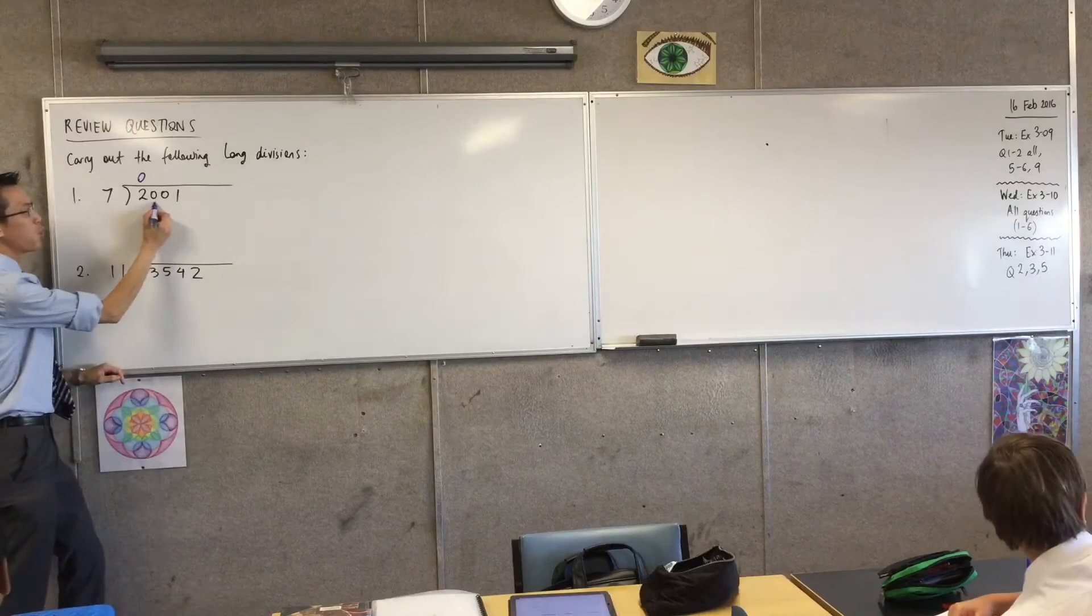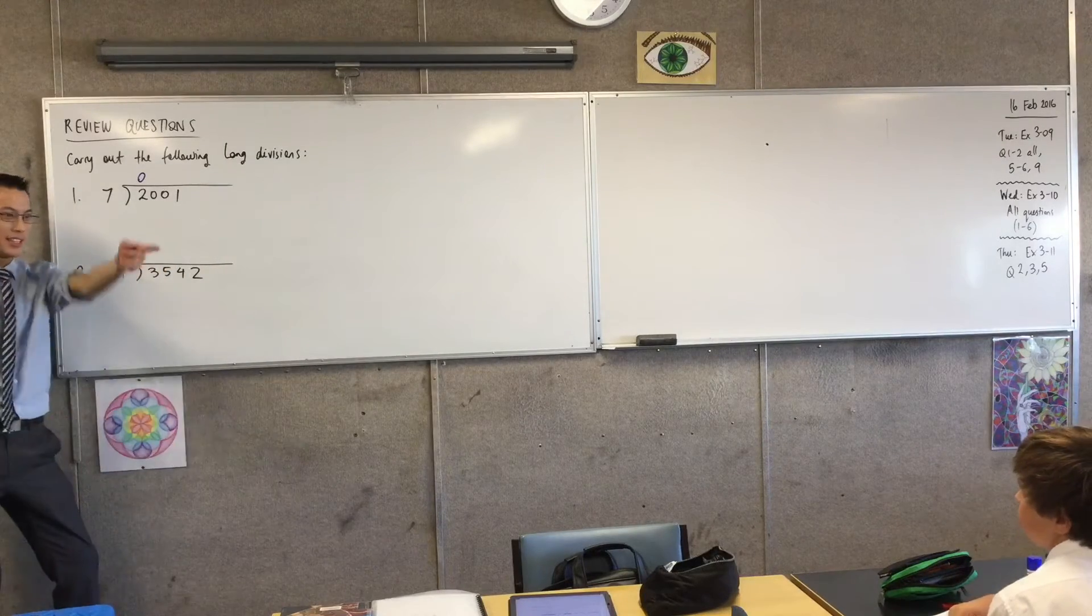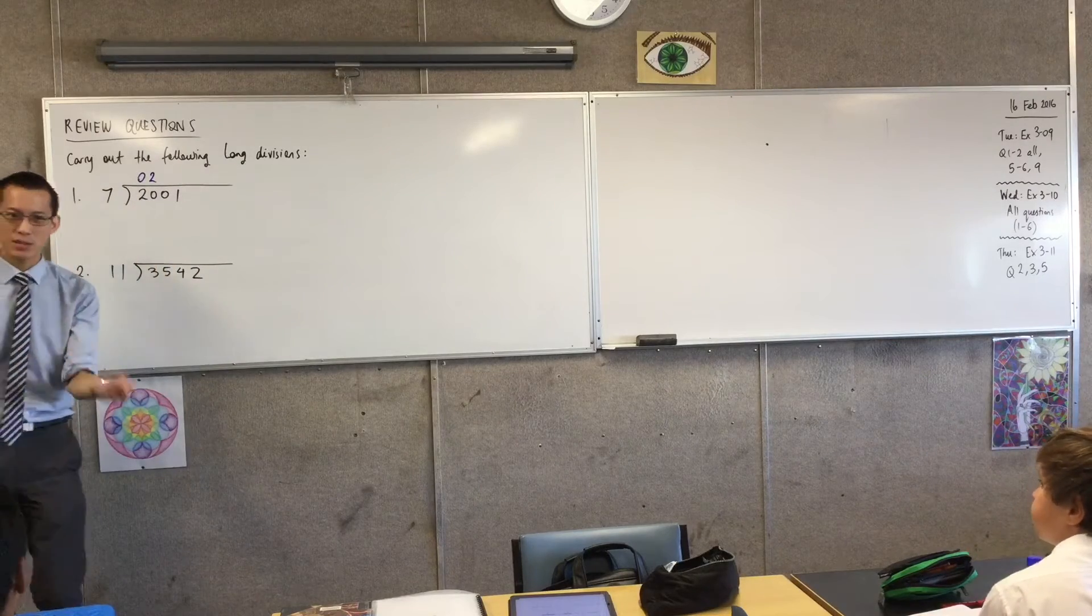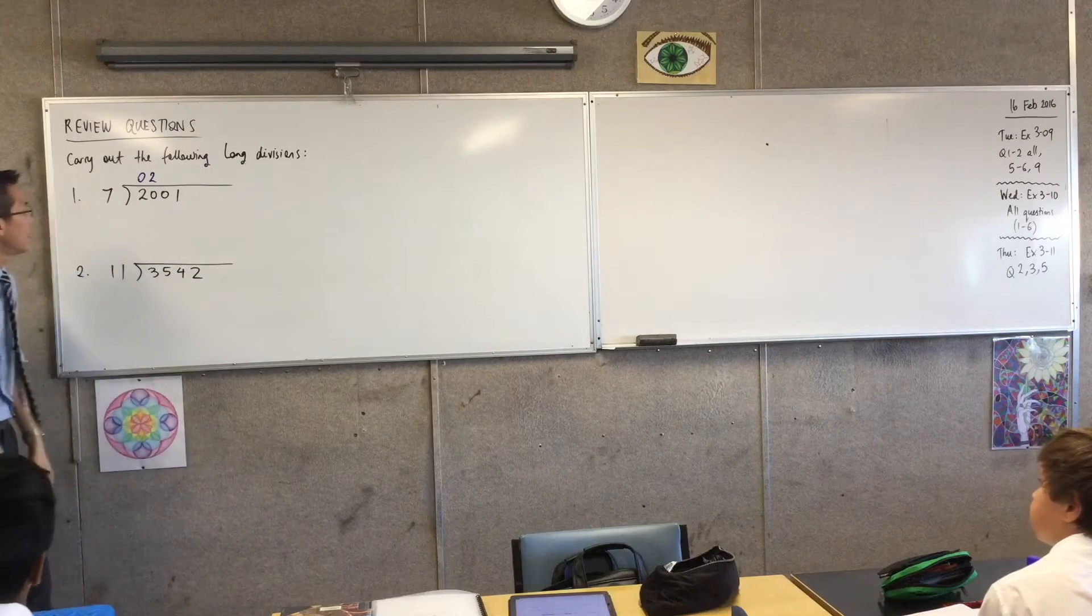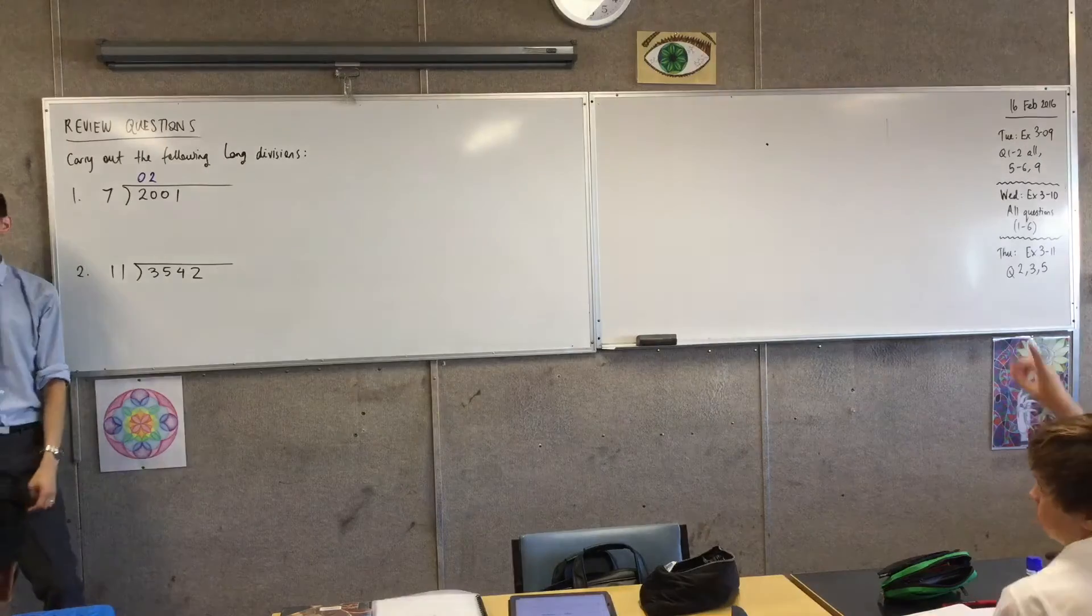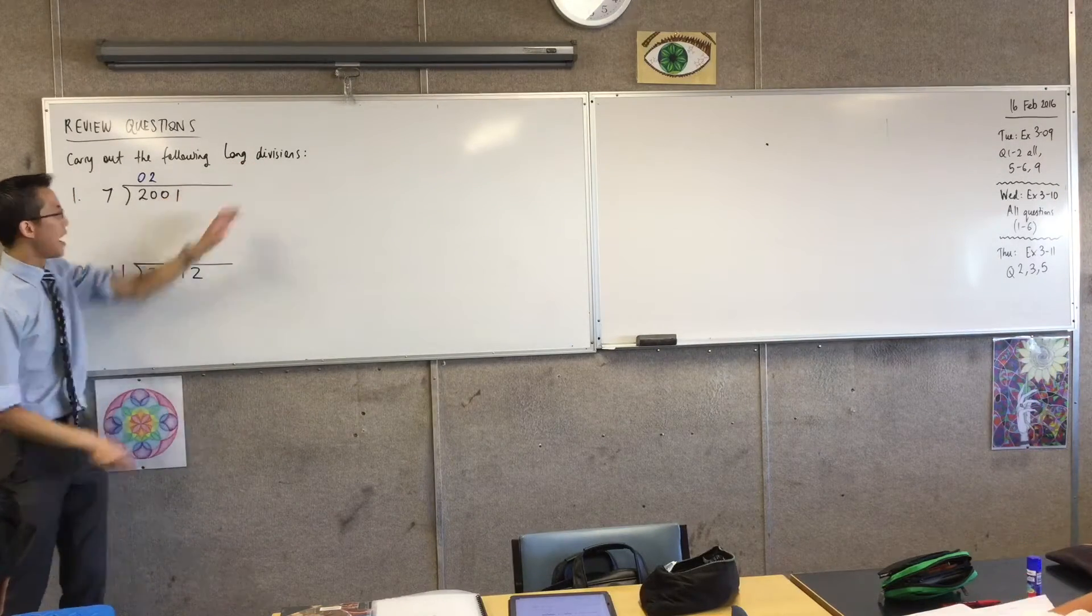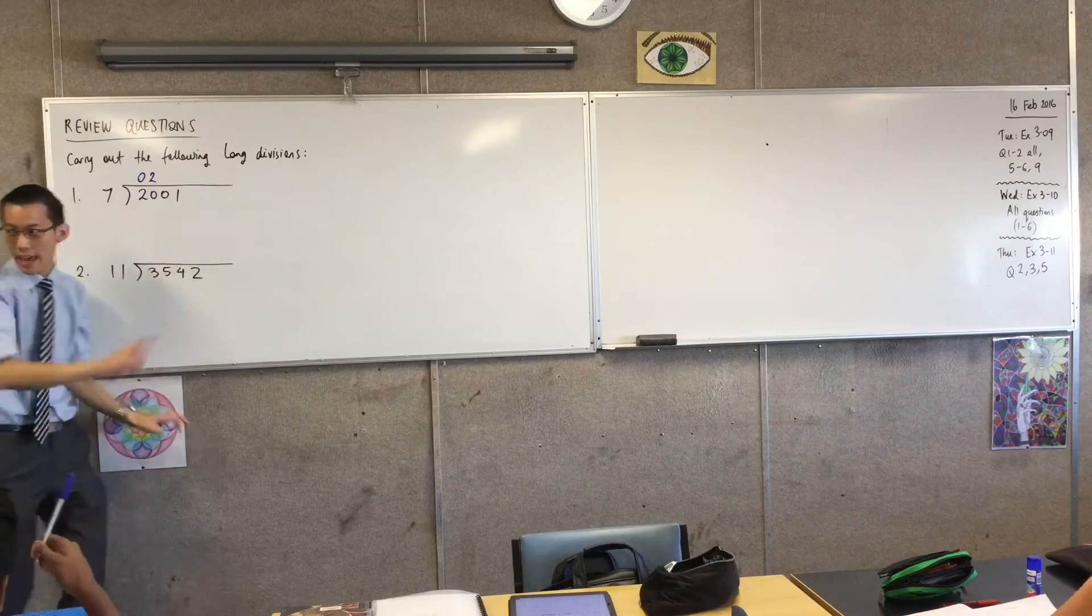How many 7s can I fit in 20? Yeah, I can fit 2 because I go 7, 14. The next one is 21, which is too big. So now what do I do at this point? Now keep in mind, by the way, I'm trying to do this through long division and I'm trying to do less in my head if I can. Yes, Aiden.